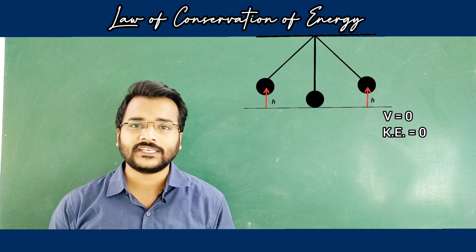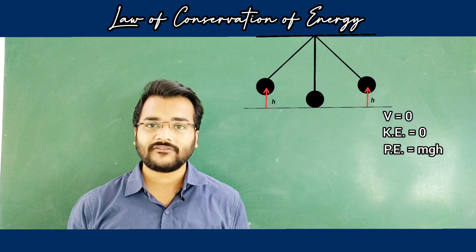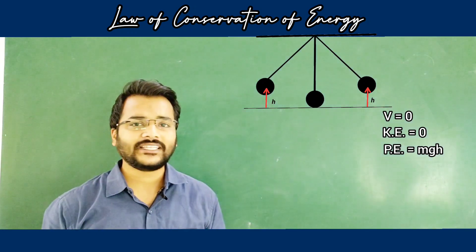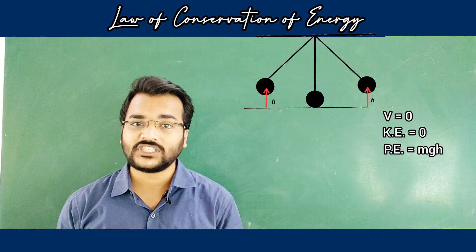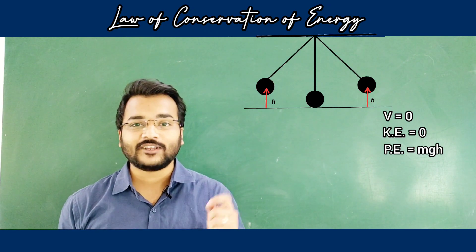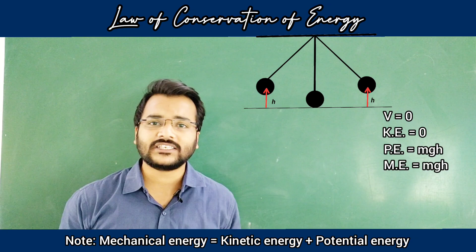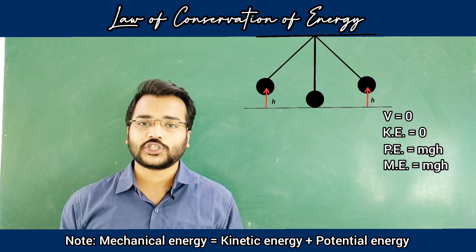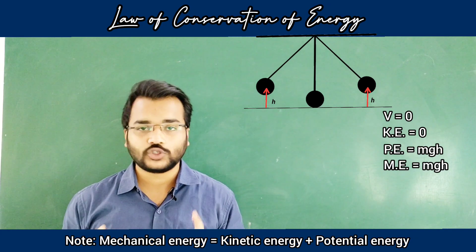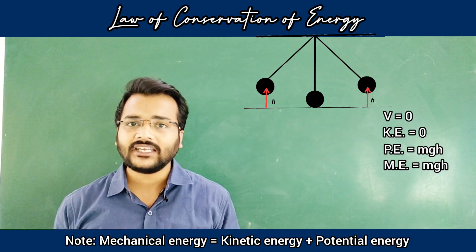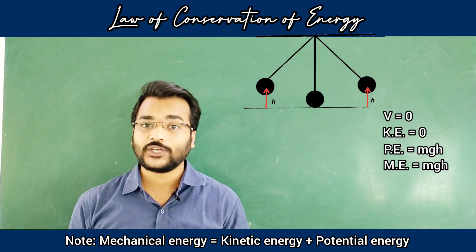Now what about potential energy? The formula for potential energy is m×g×h, where m is mass, g is acceleration due to gravity, and h is the height from the ground. At the extreme position, the body is at a certain height from the ground. So kinetic energy is zero and potential energy is mgh, meaning the total mechanical energy at the extreme position is equal to mgh. At the other extreme position the answer will also remain the same, because the distance from the mean position is equal and the ball is at the same height.